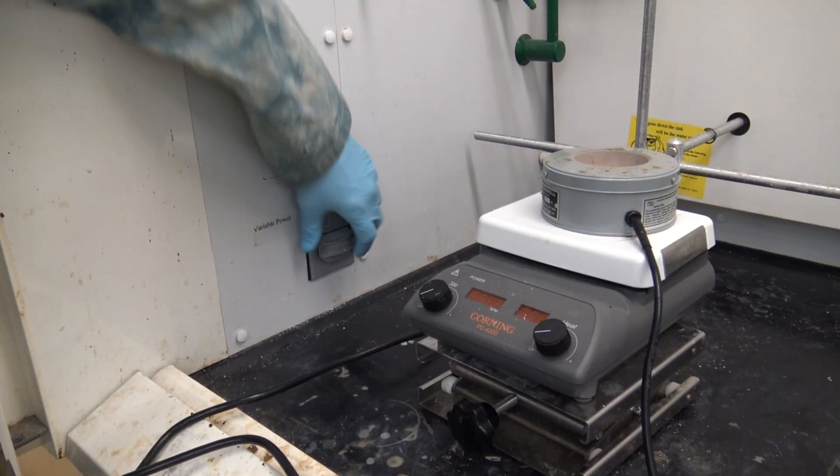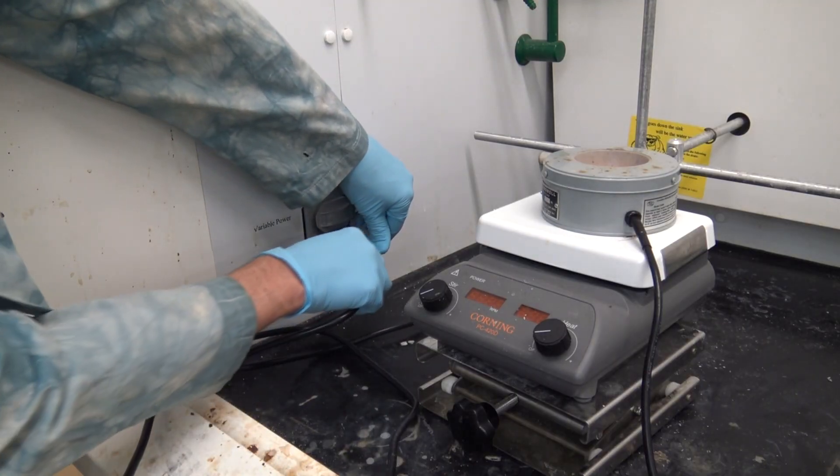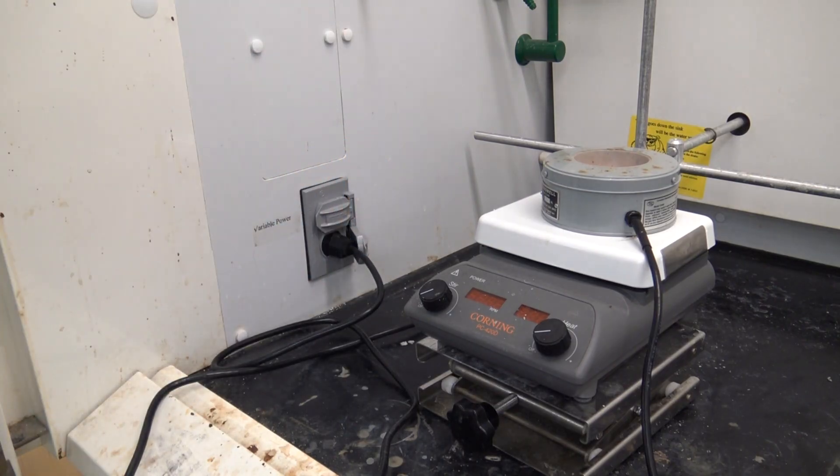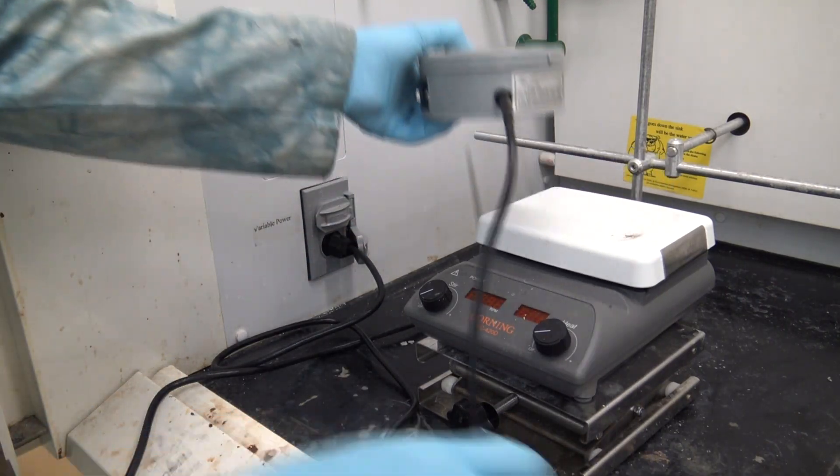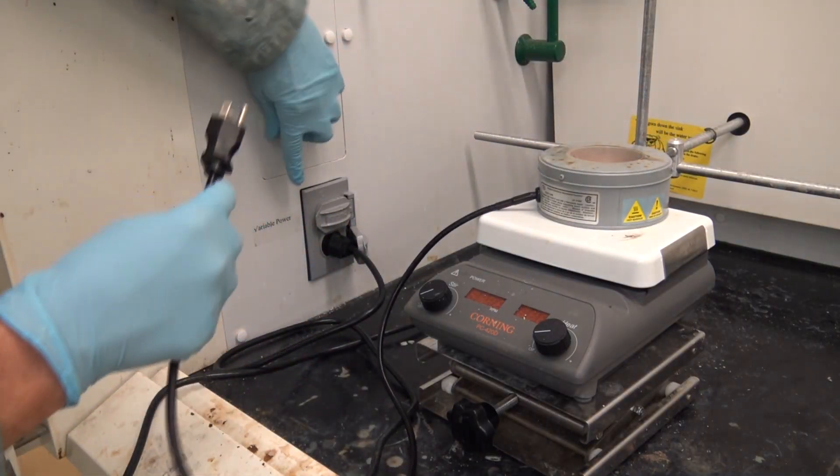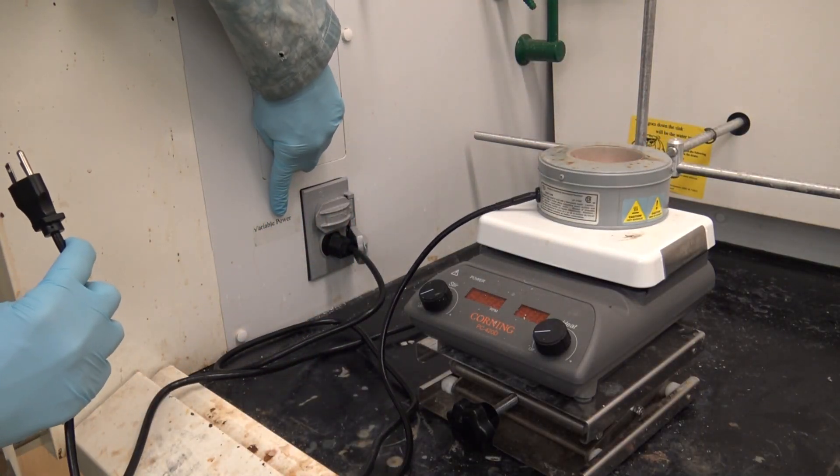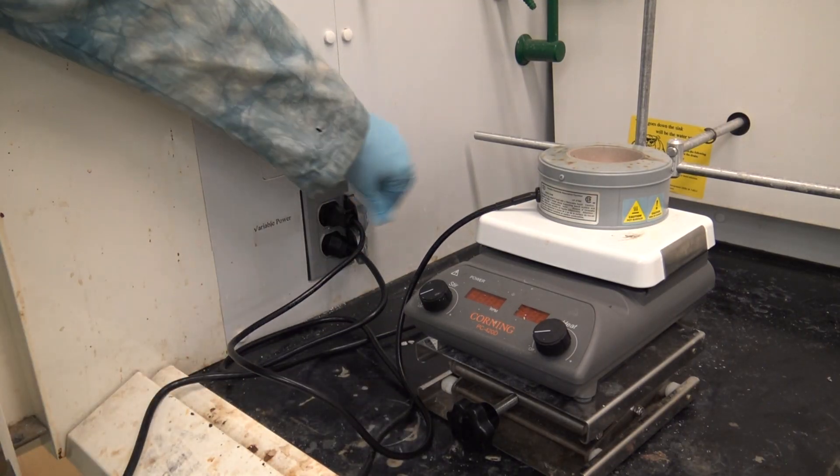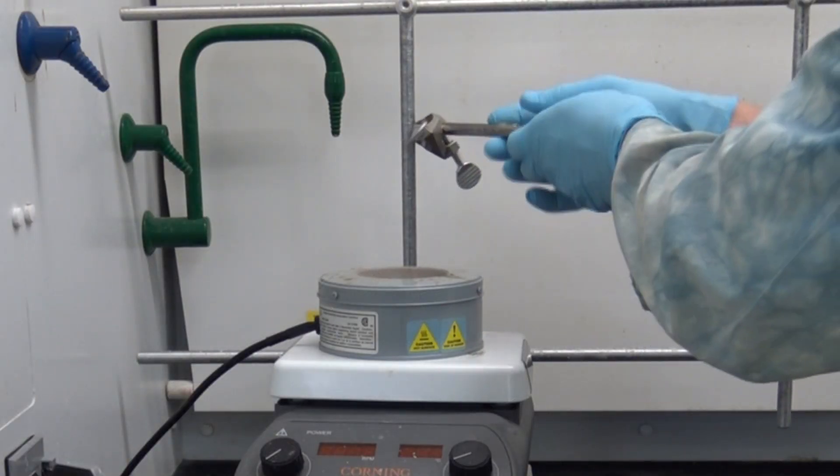We're going to plug our stir plate into the non-variable power outlet because we're going to use the dial on the stir plate to designate how fast that stirs. But our thermal well on the other hand, we've got an external control for that. So let's plug that into the variable power outlet, the one that's got the variable power marking right next to it.